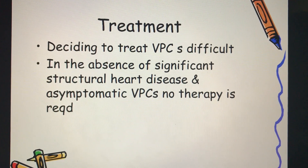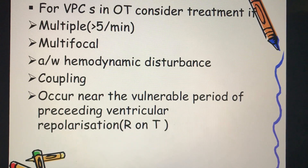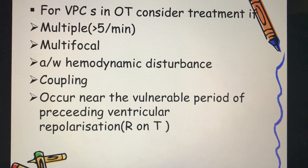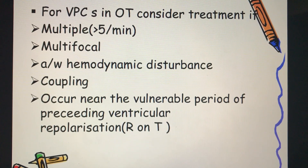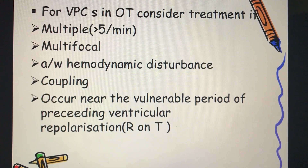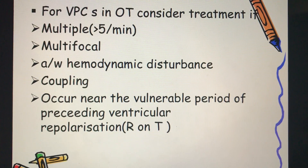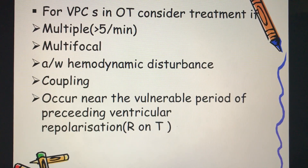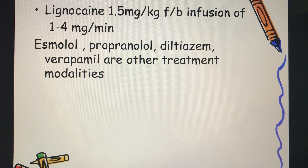The treatment of VPCs is a difficult question. In the absence of significant structural heart disease, an asymptomatic VPC need not be treated. If a VPC occurs in the OR, consider treatment if it is multiple (more than five per minute), if it is multifocal, if it is associated with hemodynamic disturbance, if there is coupling, or if you are dealing with an R-on-T phenomenon.